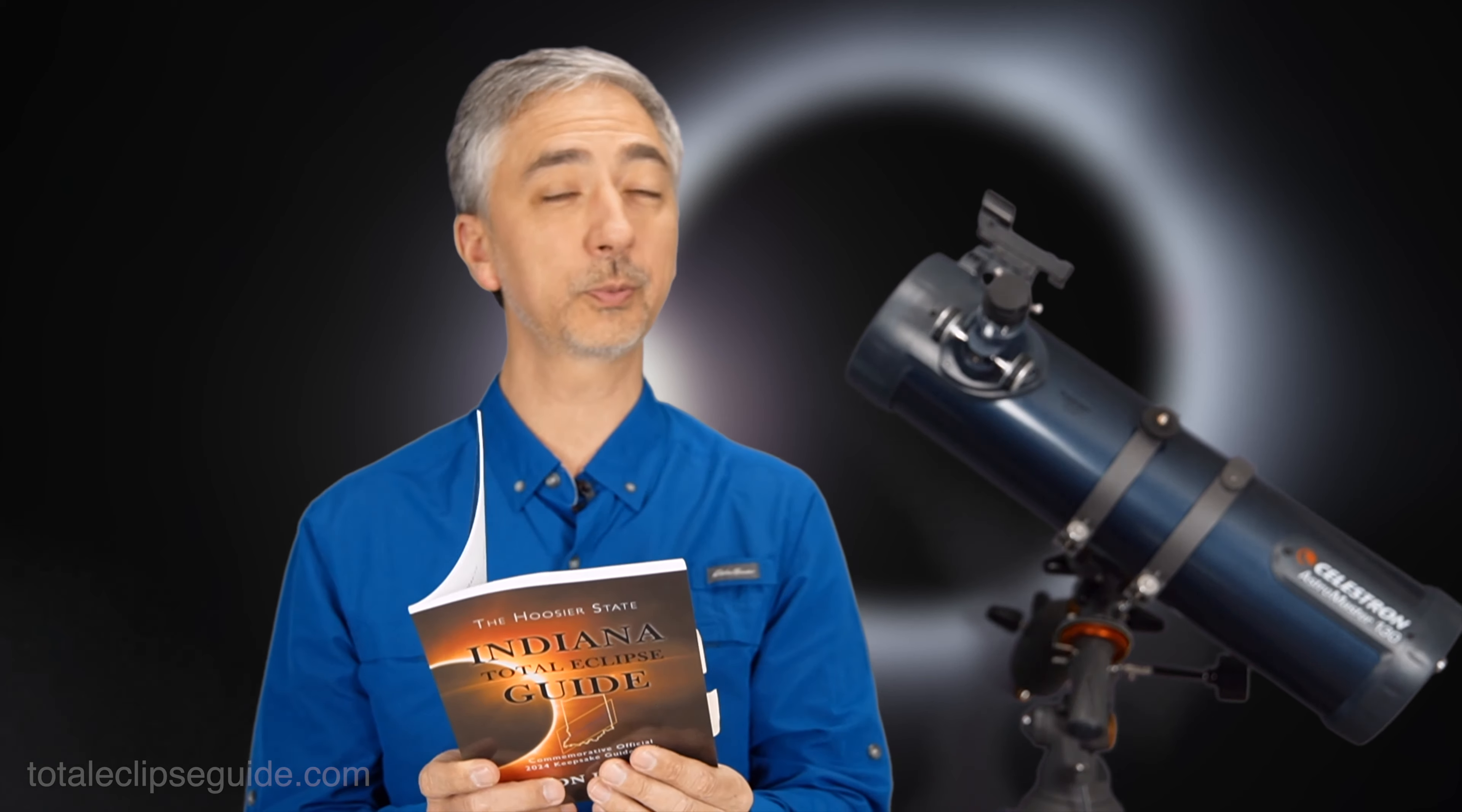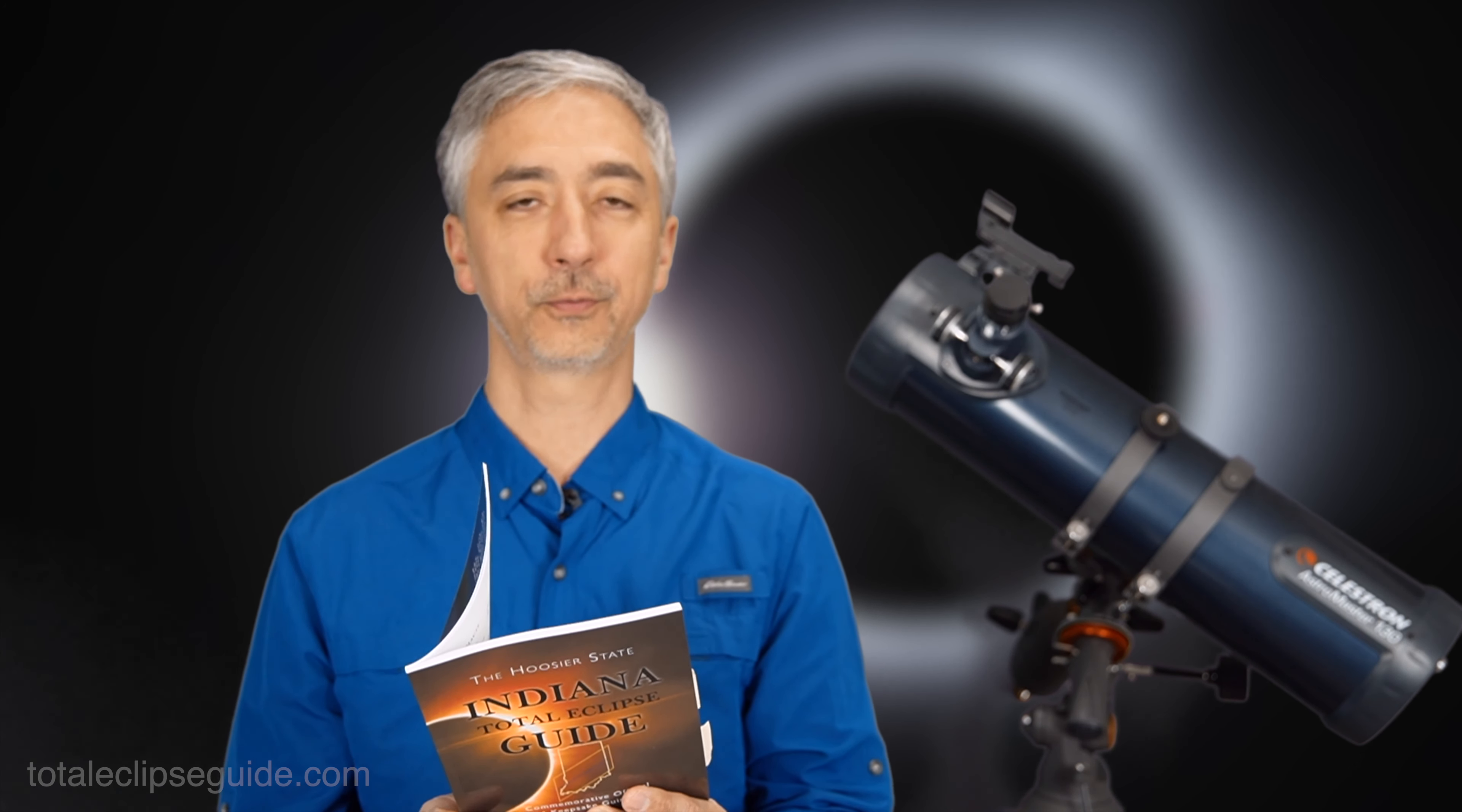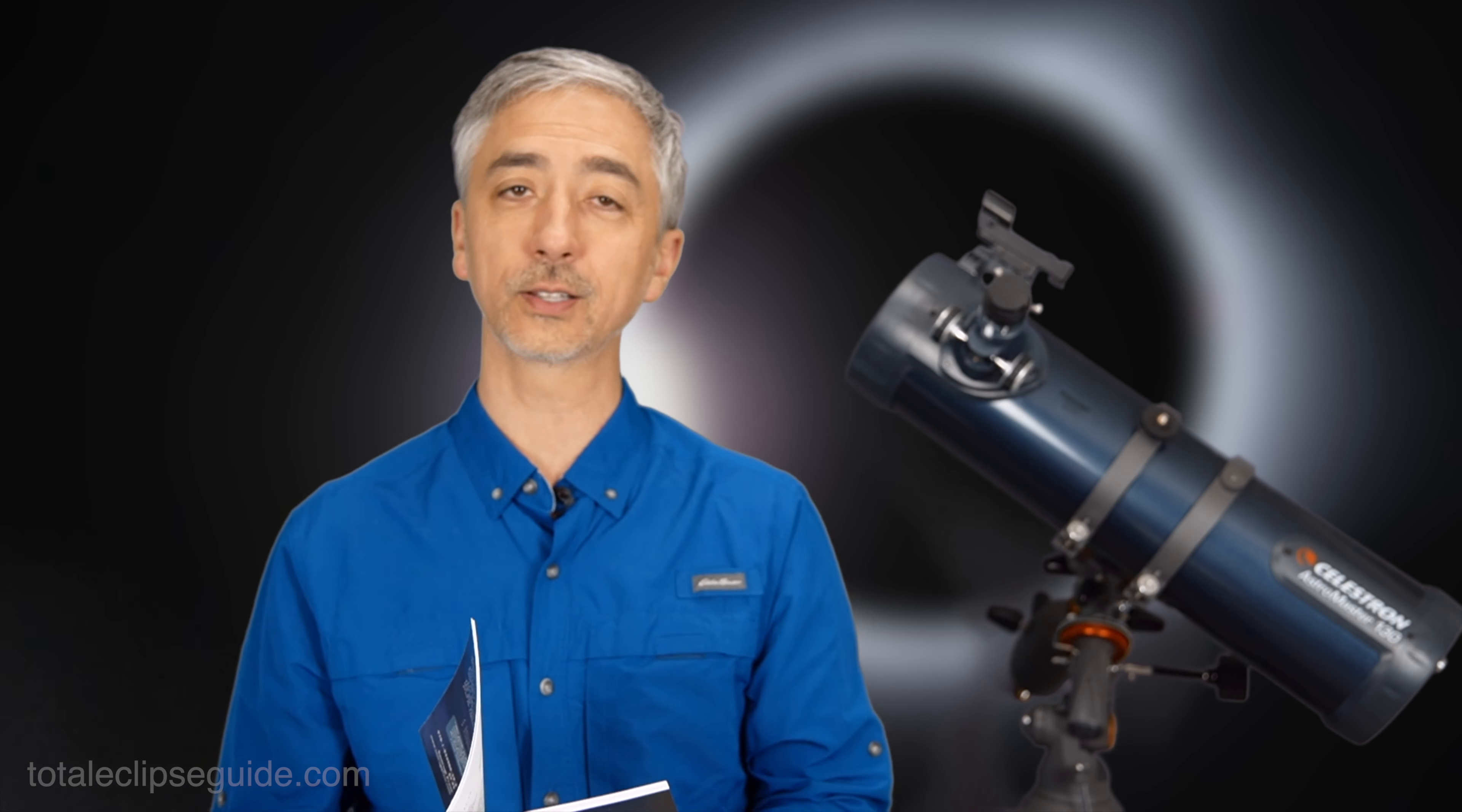The eclipse begins at 1:49 PM in the afternoon, and the totality happens at 3:05 and 57 seconds. Then a short three minutes later at 3:09 and 6 seconds, the totality will be over in the city, and then the moon will finally pass away from the sun at 4:23 in the afternoon.